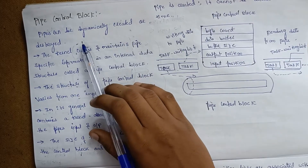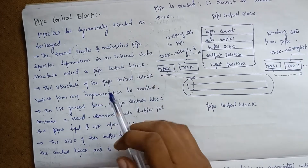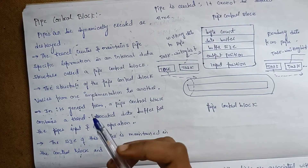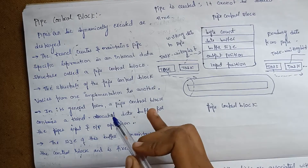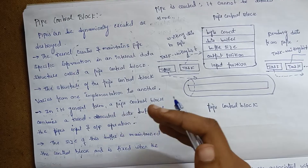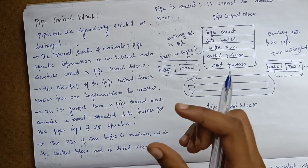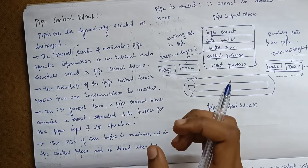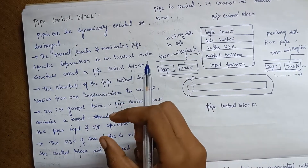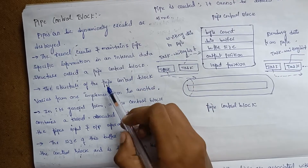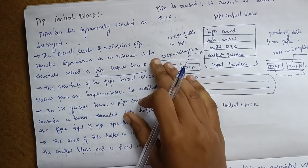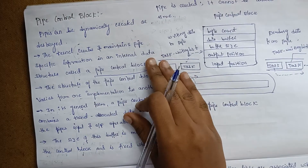Now we will talk about pipe control blocks. Pipes can be dynamically created or destroyed. When we use the kernel, we will create the pipes. We can also use the PCB. The kernel is used to maintain the data and specific information in the internal data structure.